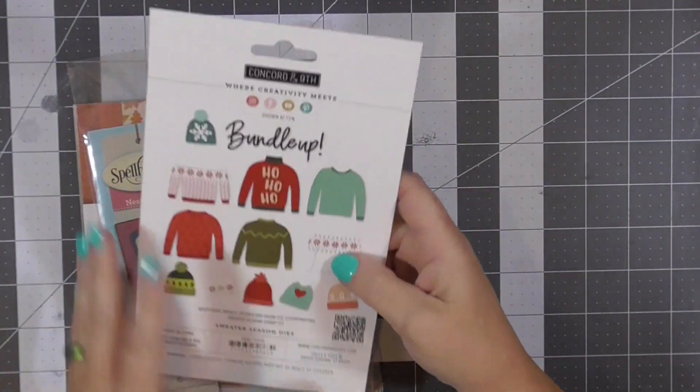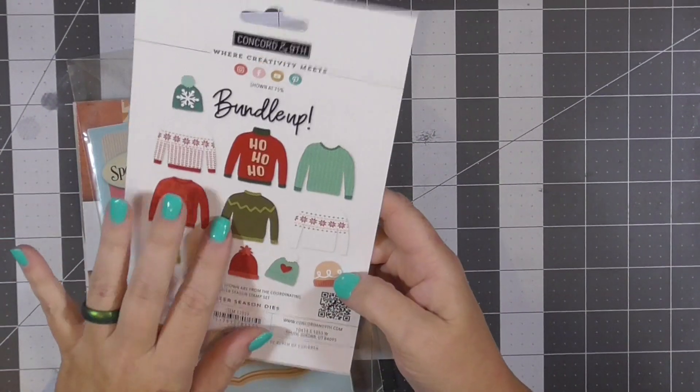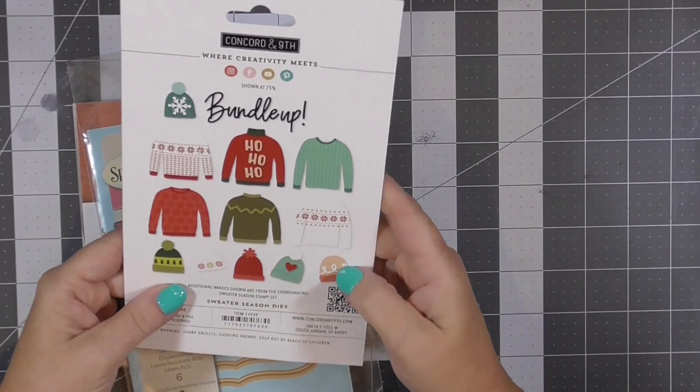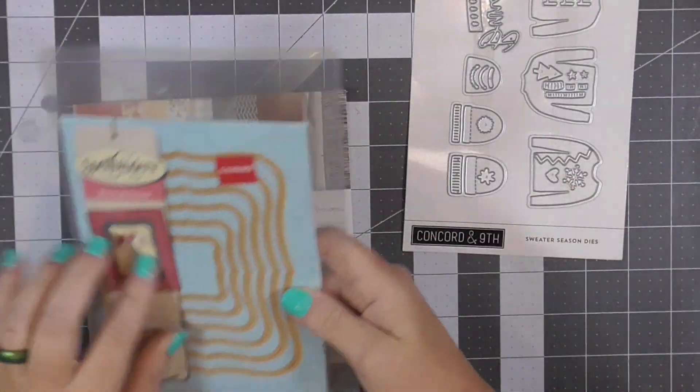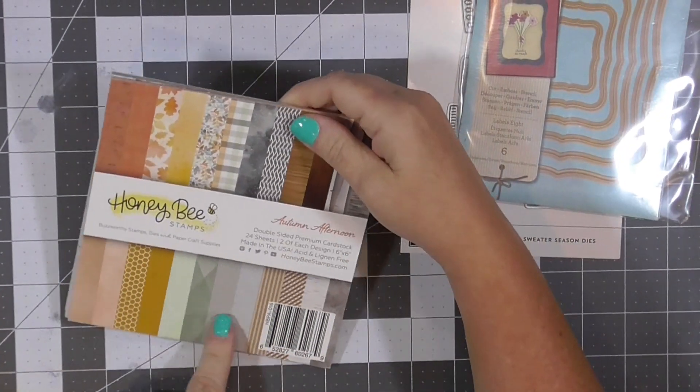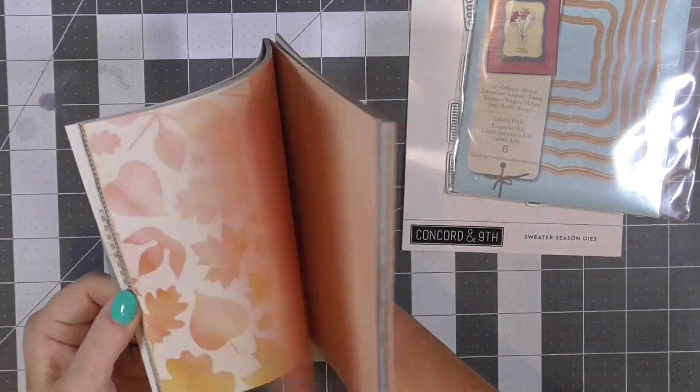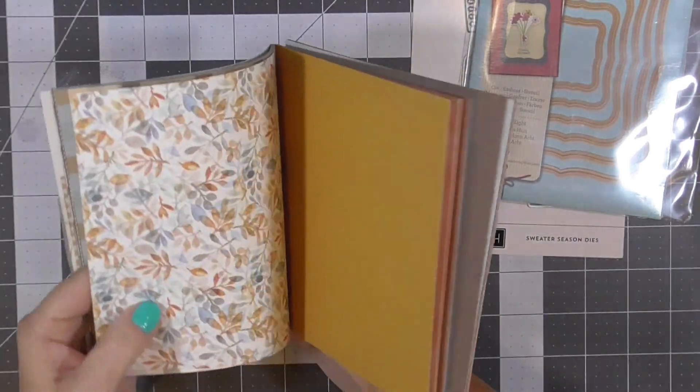I am working with the Concord & 9th Sweater Seasons Die Set. There is a coordinating stamp set. I don't have it yet. I think I might need to get it. I'm also using the Spellbinders Labels 8 Nestabilities and a Honey Bee Stamps Autumn Afternoon Paper Pad.